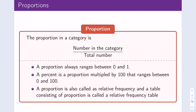A proportion in a category is the number in the category divided by the total number. A proportion always ranges between 0 and 1. A proportion and a percent are related in that a proportion multiplied by 100 gives you a percent. If you ever calculate a proportion greater than 1 or less than 0, you know you've done something wrong — that's a sanity check for your mathematics.